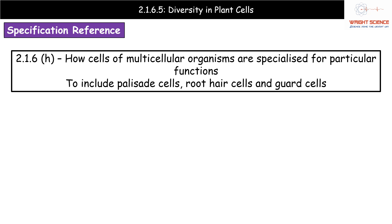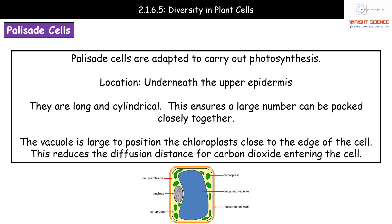Welcome to our video all about diversity in plant cells. This is part of our module 2 part 6 series on cell division, cell diversity, and cell differentiation. We'll be looking at specification reference 2.1.6h: how cells of multicellular organisms are specialized for particular functions. In our previous video we looked at diversity in animals; in this video we're going to focus on plants.